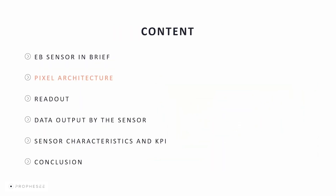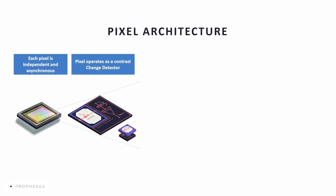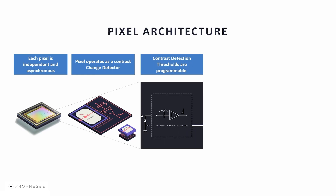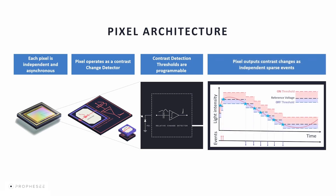Now we will learn about the pixel architecture. Looking at a single pixel of the sensor, we can see the photodiode and the logic. Note this picture corresponds to an approximation of our Gen 3 sensor — Gen 4 and IMX sensors are 3D stacked so the photodiode is on a separate layer. Each pixel operates as a contrast change detector similar to a logarithmic photoreceptor in the human eye. Incoming light hits the photodiode, generates a photocurrent, which is converted to a voltage by a logarithmic converter.